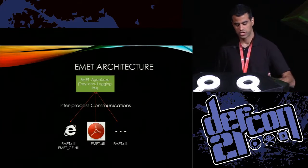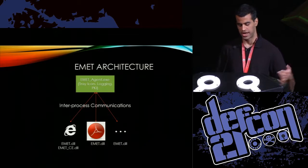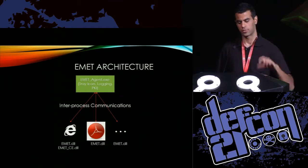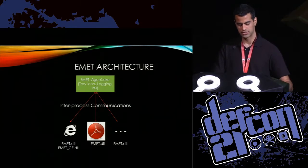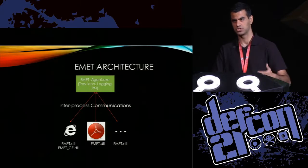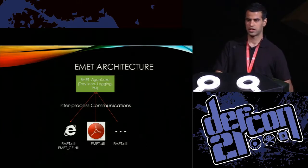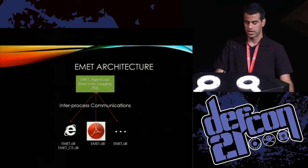The architecture of EMET: at the bottom we have the protected processes — IE, Acrobat, and whatever else you want to protect — with EMET.dll loaded into them. EMET.dll implements the memory corruption mitigations. For IE, you also see EMET_CE on the bottom, which handles part of the PKI mitigation. All these DLLs use interprocess communication to communicate with the EMET agent running on your machine, which implements the tray icon, logging, and PKI logic. EMET_CE.dll is loaded into browsers or programs that use Windows CAPI — Crypto APIs.